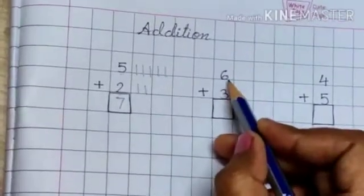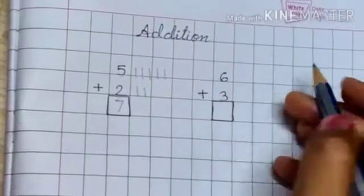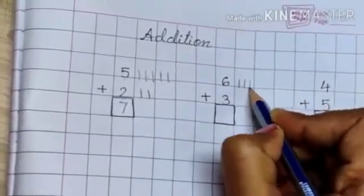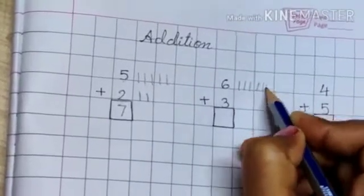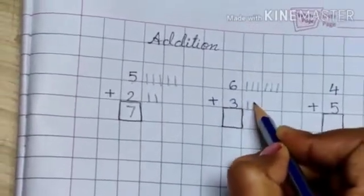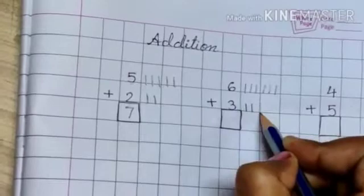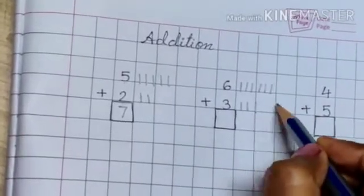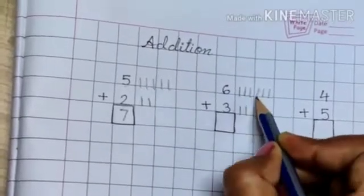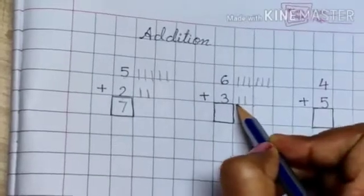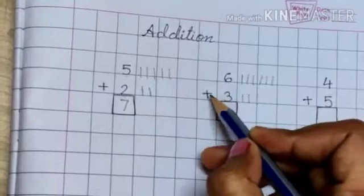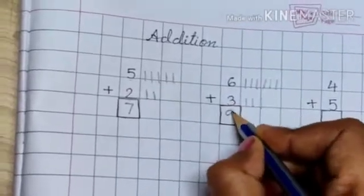Over here we have number six, so we will draw six lines: one, two, three, four, five, six. And here we have number three, so we will draw three lines: one, two, three. Now we count all the lines together: one, two, three, four, five, six, seven, eight, nine. That means six plus three equals nine.